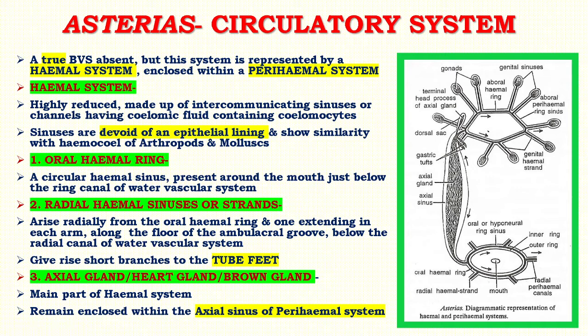As you know, Asterias belongs to class Asteroidia and phylum Echinodermata. A true blood vascular system is absent, but this system is represented by a haemal system which is enclosed within a perihemal system. The haemal system is highly reduced. It is made up of intercommunicating sinuses or channels having coelomic fluid containing coelomocytes. The sinuses are devoid of an epithelial lining and show similarity with haemocytes of arthropods and mollusks.